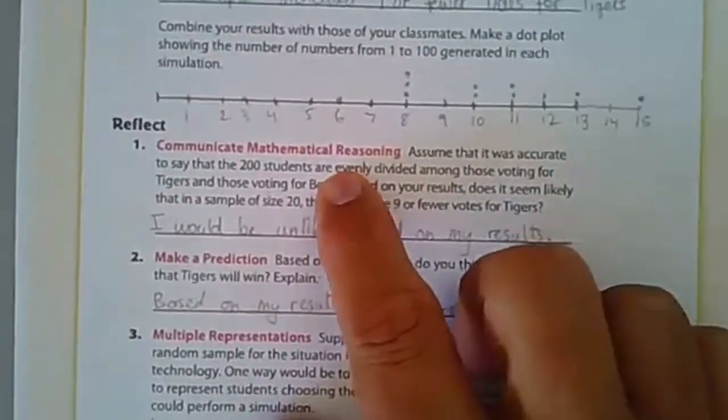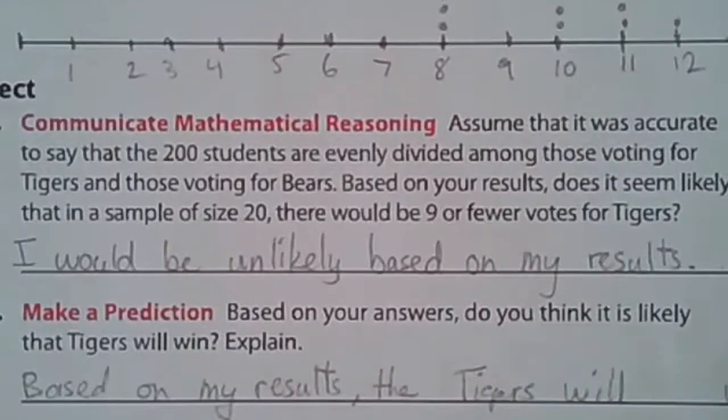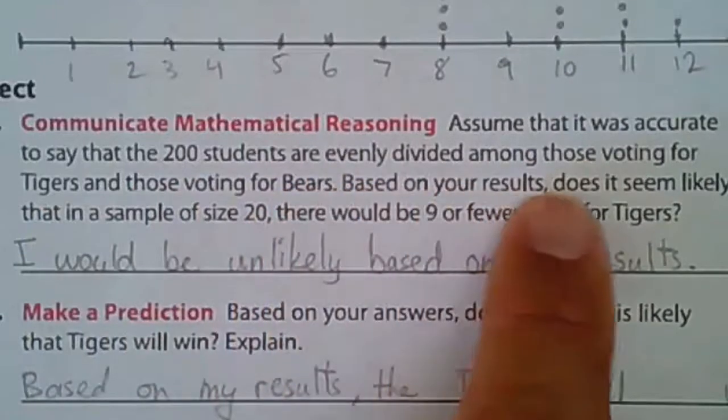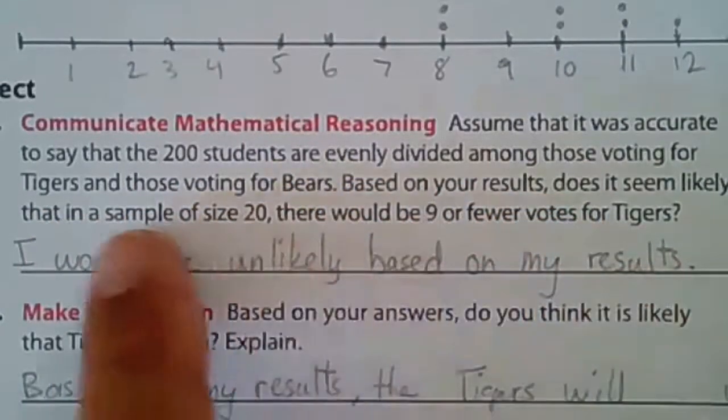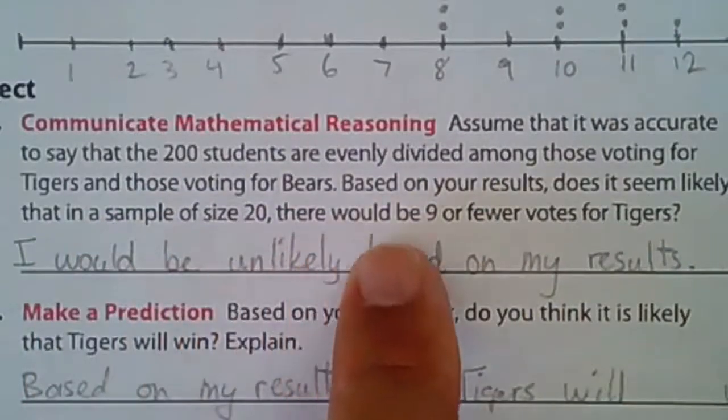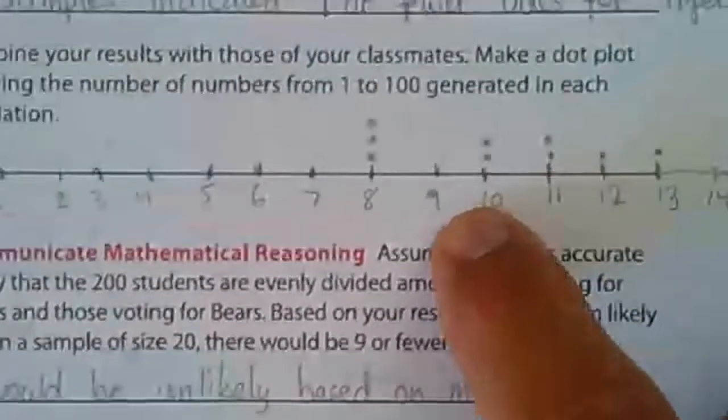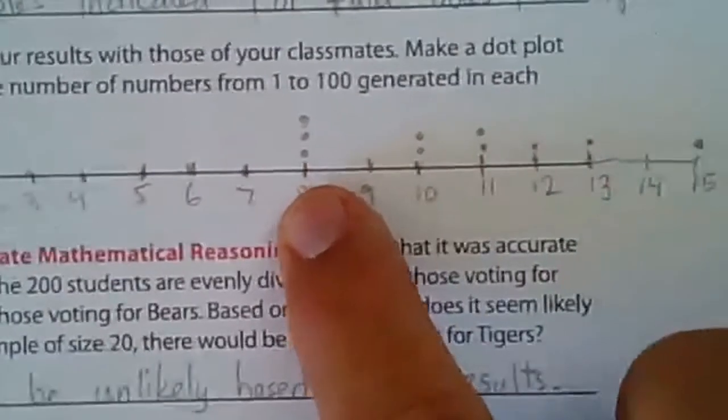We can communicate some mathematical reasoning here. Assume that it was accurate to say that 200 students are evenly divided among those voting for Tigers and those voting for Bears. Based on the result, does it seem likely in a sample size of 20 that there would be nine or fewer votes for Tigers? It would be unlikely based on my results.